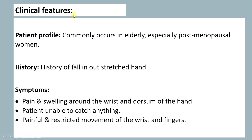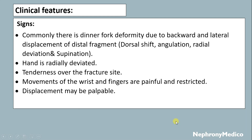Clinical features: the patient profile includes commonly elderly patients, especially postmenopausal women. The history includes a fall on an outstretched hand. Symptoms include pain and swelling around the wrist, and the patient is unable to catch anything, with painful and restricted movement of the wrist and fingers.